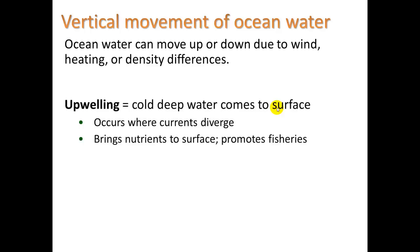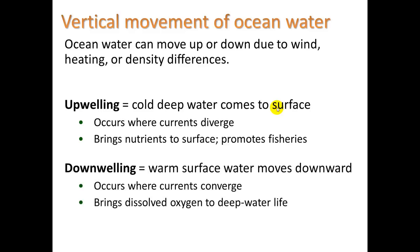To summarize: ocean water can move up or down due to wind, heating, or density differences. Upwelling is cold deep water coming to the surface; it occurs where currents diverge — where currents separate — and importantly brings nutrients to the surface, promoting fisheries. Downwelling is where warm surface water moves downward; it occurs where ocean currents converge — where two currents run into each other and one gets pushed downward — and this brings dissolved oxygen to deep water life.